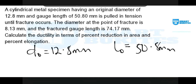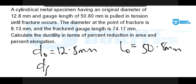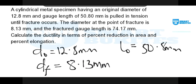This material is pulled in tension until it fractured — that is, it breaks. The diameter at the point of fracture reduced; the final diameter becomes 8.13 millimeters. The fracture gauge length, that is the final length at the point of fracture, becomes 74.17 millimeters after the elongation.